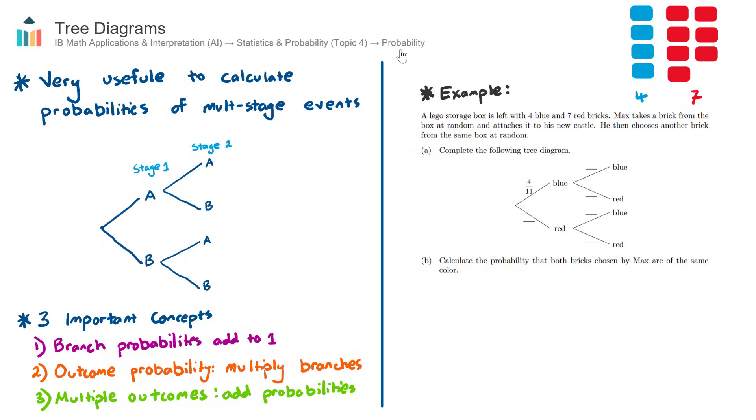In the AISL course, you'll encounter two types of probability questions: tree diagrams and Venn diagrams. In the AIHL course, in addition to tree and Venn diagrams, you'll also have transition matrices and Markov chains. In summary, under the subtopic of Probability for AISL, we have tree diagrams and Venn diagrams.